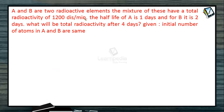A and B are two radioactive elements. The mixture of these have a total radioactivity of 1200 disintegrations per minute. The half-life of A is one day and for B it is two days. What will be the total radioactivity after four days, given that the initial number of atoms in A and B are the same?